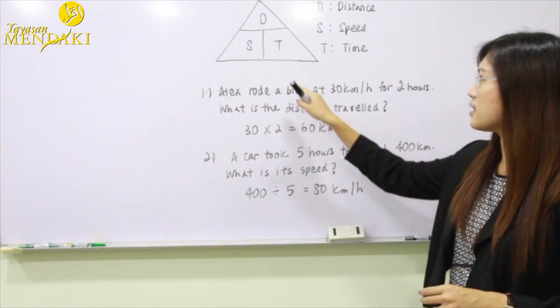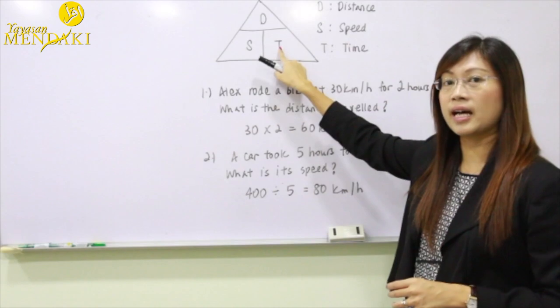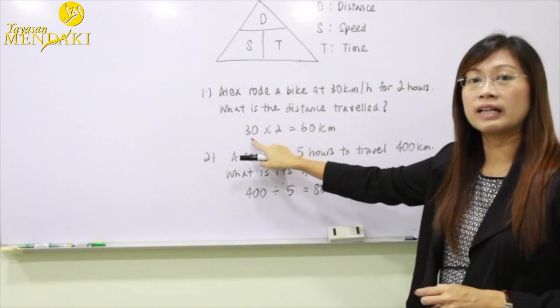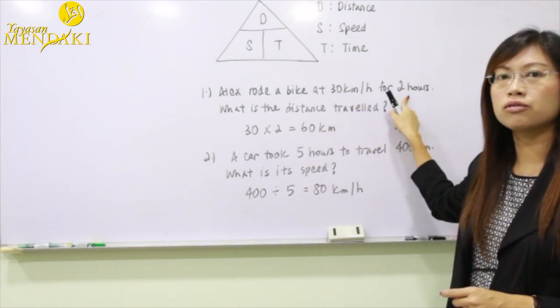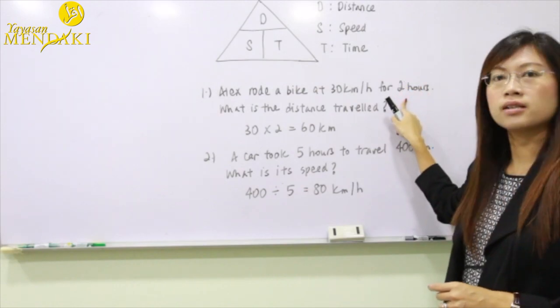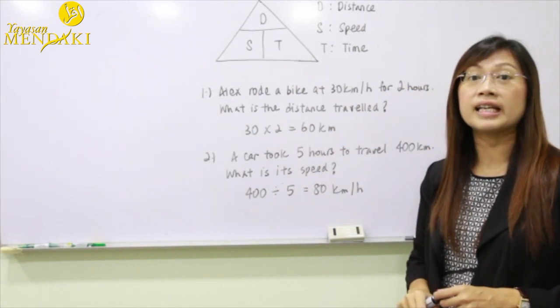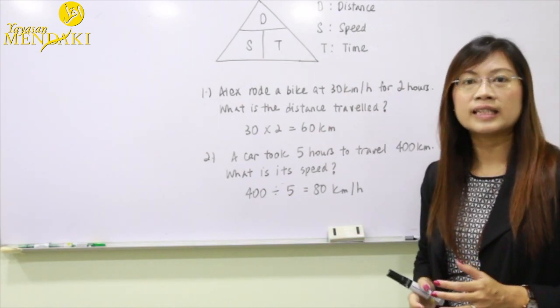To find the distance, we are going to take the speed and multiply by the time. The speed given in the question is 30 km per hour and the time is two hours. So we have to take 30 times 2 and that gets you to 60 km. Therefore, Alex has traveled 60 km.